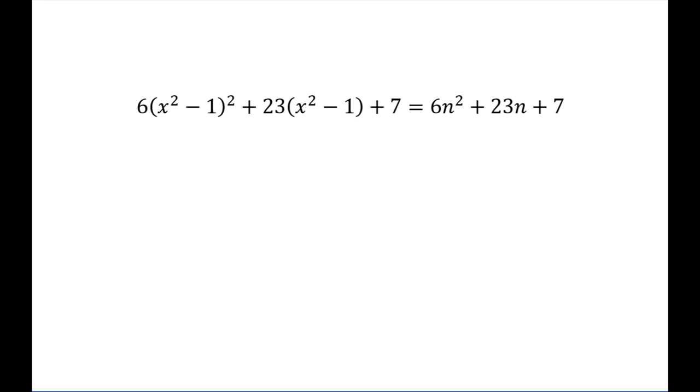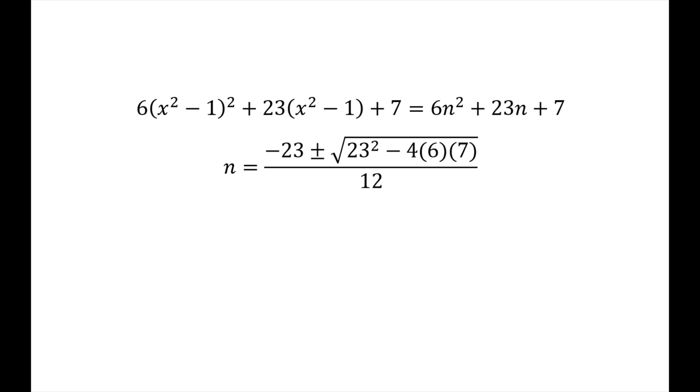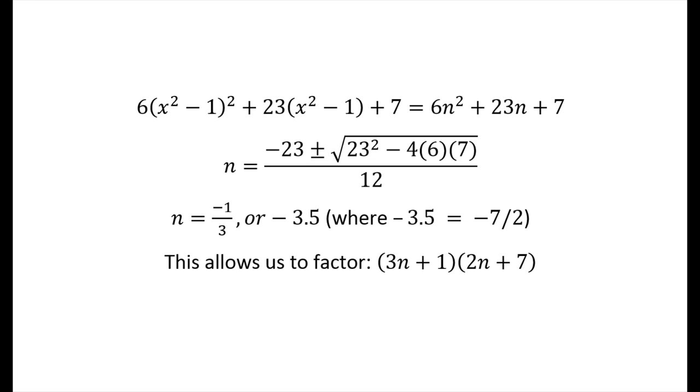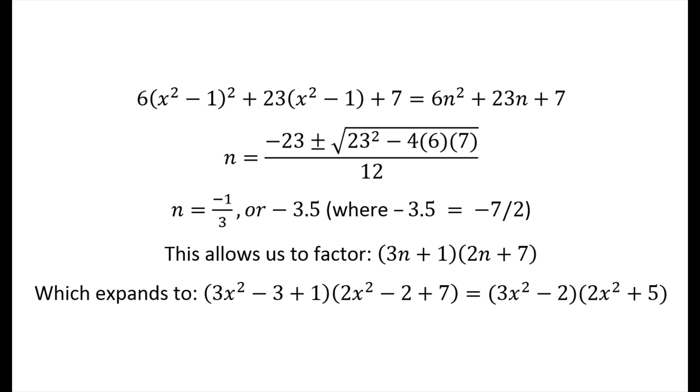We fit that into a quadratic formula. Maybe we could have grouped the terms as well, or maybe someone could have seen a solution easily. But the surefire way is the quadratic formula, where we discover that n is either negative 1 third or negative 3.5. And 3.5 is kind of like negative 7 halves, and this allows us to factor the quadratic to 3n plus 1 times 2n plus 7. And substitution gives us 3x squared minus 2 multiplied by 2x squared plus 5 when we work out the terms.